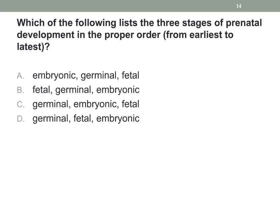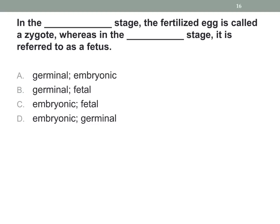Let's review briefly. Which of the following lists the three stages of prenatal development in the proper order, from earliest to latest? The answer is C: germinal, embryonic, and fetal.